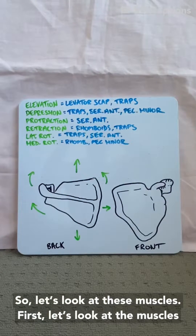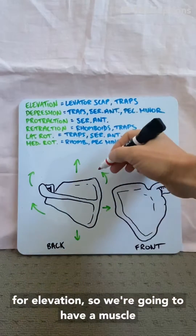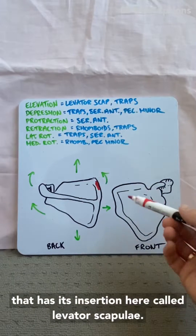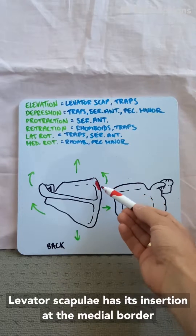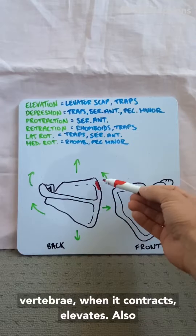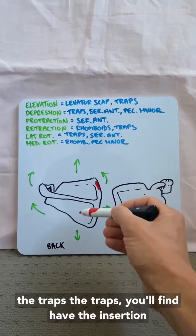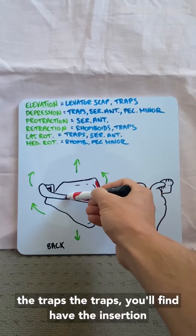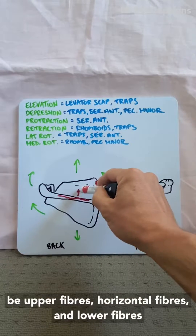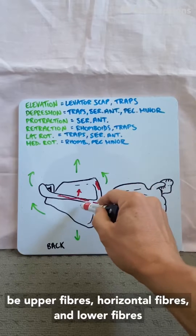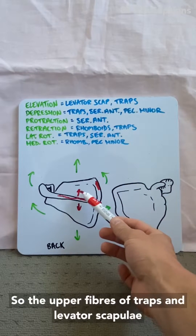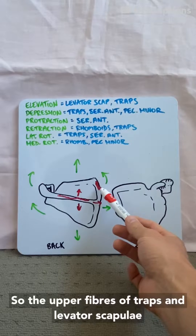So let's look at these muscles. First, let's look at the muscles for elevation. We're going to have a muscle that has its insertion here called levator scapulae. Levator scapulae has its insertion at the medial border of the scapula and its origins at the cervical vertebrae. When it contracts, it elevates. Also the traps — the traps have their insertion along the spine of the scapula, with upper fibers, horizontal fibers, and lower fibers. So the upper fibers of traps and levator scapulae are important for elevation.